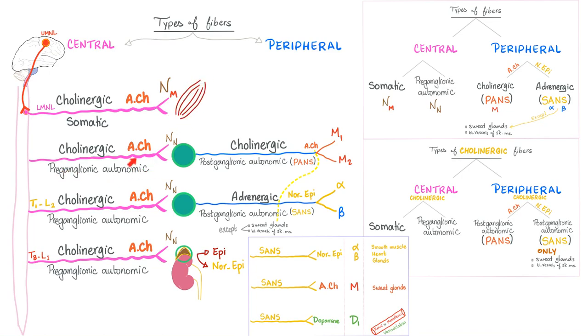How about preganglionic fibers, whether parasympathetic or sympathetic? They always secrete acetylcholine. If it's preganglionic, it's acetylcholine, therefore cholinergic. Rene Descartes said, Cogito ergo sum - I think, therefore I am. But Medicosis said, I'm preganglionic, therefore I'm cholinergic.